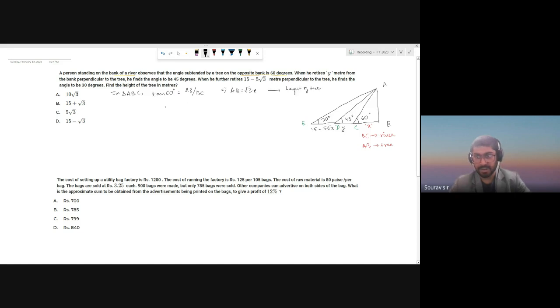Keep that in mind. Now check triangle ADB. Tan 45 degrees equals AB by BD, which means AB equals BD because tan 45 is 1. Now AB we had root 3 X and BD is BC plus CD. BC we assumed to be X, and CD is Y, so X plus Y. This gives us Y equals root 3 minus 1 times X.